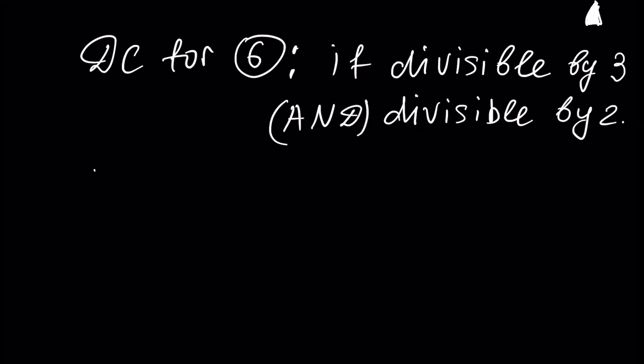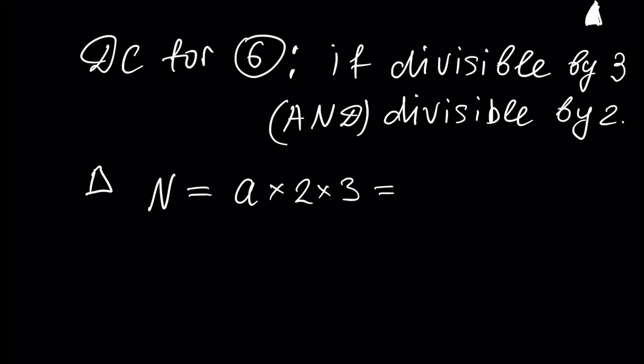Let's prove it first. It's quite obvious result. If our number is divisible by 2 and 3, then it has a representation, and our number n is equal to a times 2 times 3. Any number can be written as the multiplication of prime numbers — we will talk about prime numbers further.